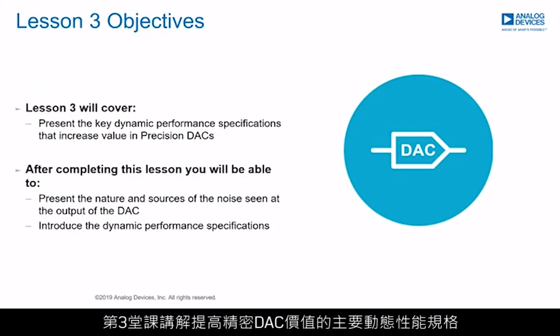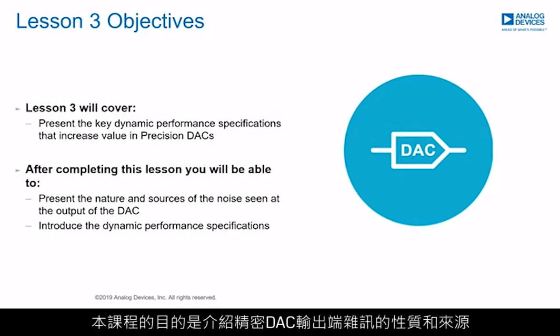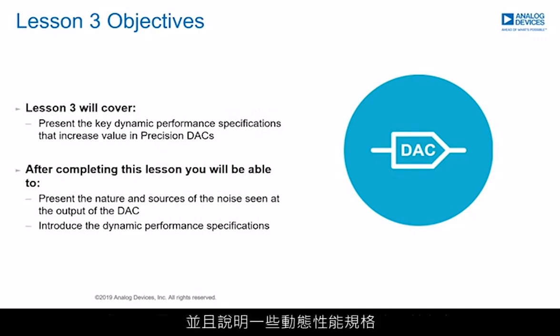Lesson three will cover the key dynamic performance specifications that increase value in precision DACs. The objectives of this lesson are to present the nature and sources of the noise seen at the output of a precision DAC, and an introduction of the dynamic performance specifications that might become a pain in certain applications.